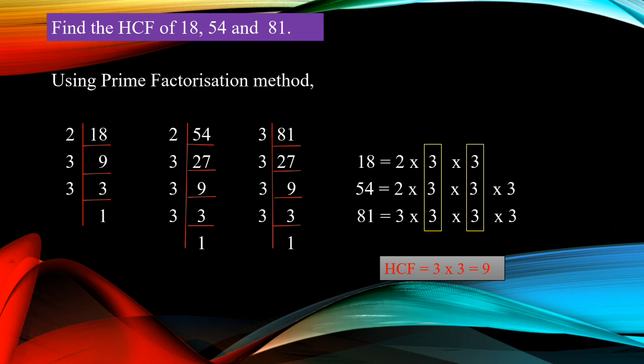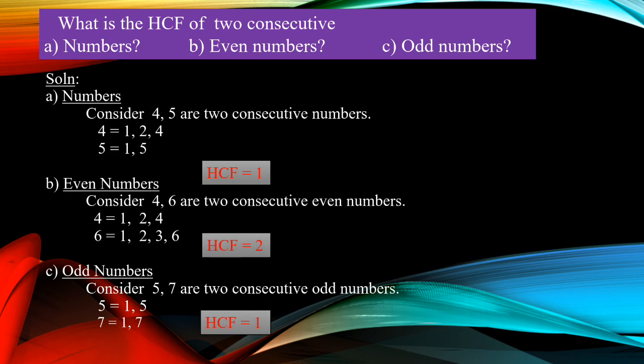I hope you could understand it. Now, what is the HCF of two consecutive numbers, even numbers, or odd numbers? What is meant by consecutive? Already we have seen this term — continuous or next numbers. Subdivision A: numbers. Consider 4 and 5 are two consecutive numbers. Factors of 4: 1, 2, 4. Factors of 5: 1, 5. The common factor is only 1. So whatever two consecutive numbers you take, the HCF is 1.